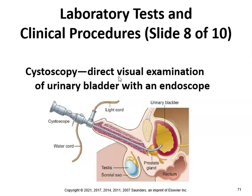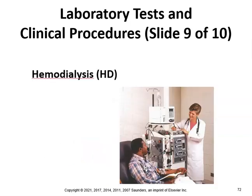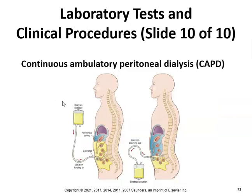Cystoscopy is a direct visual examination of the urinary bladder using an endoscope — that can be painful. A cystoscope uses a light cord inserted into the bladder. Hemodialysis and continuous ambulatory peritoneal dialysis are also used for kidney disease management.